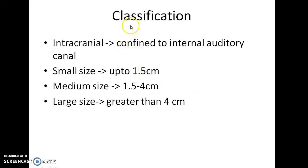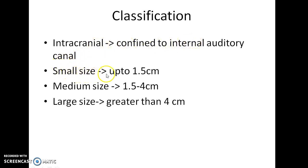Acoustic neuroma can be classified into four types depending on its size. It is called intracanalicular when confined to the internal auditory canal. It is small size when less than 1.5 cm, medium size when between 1.5 and 4 cm, and large size when greater than 4 cm.